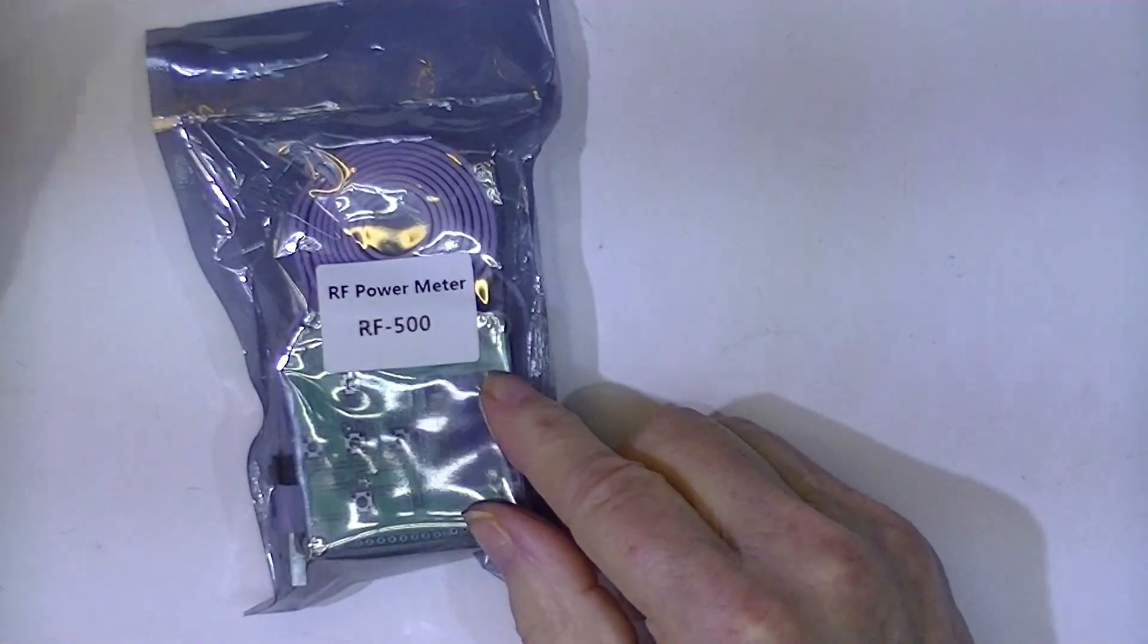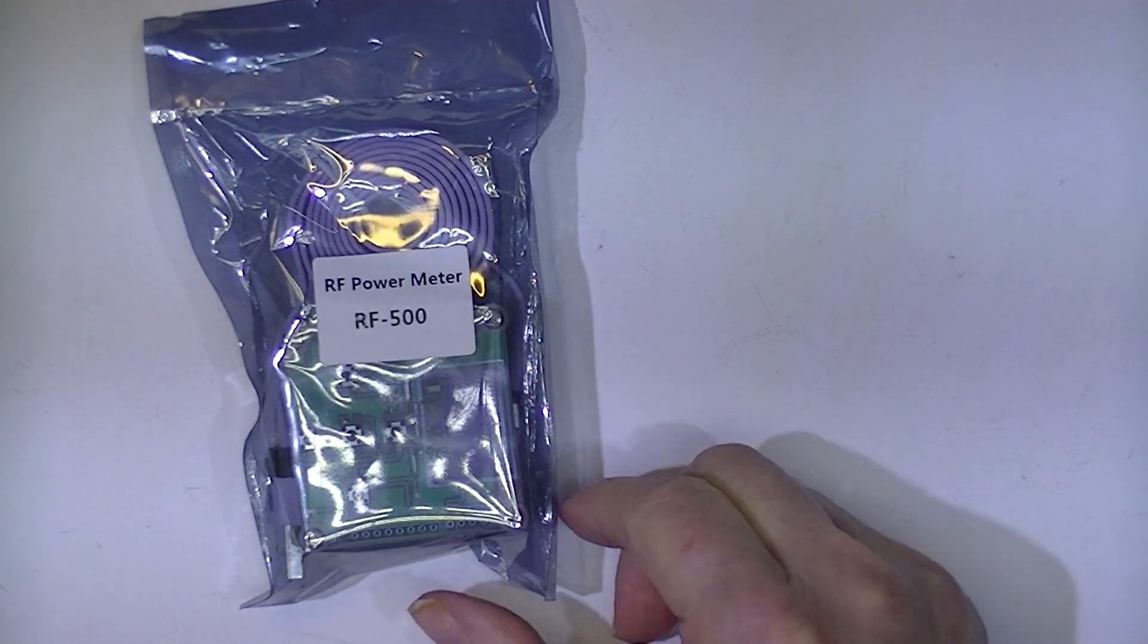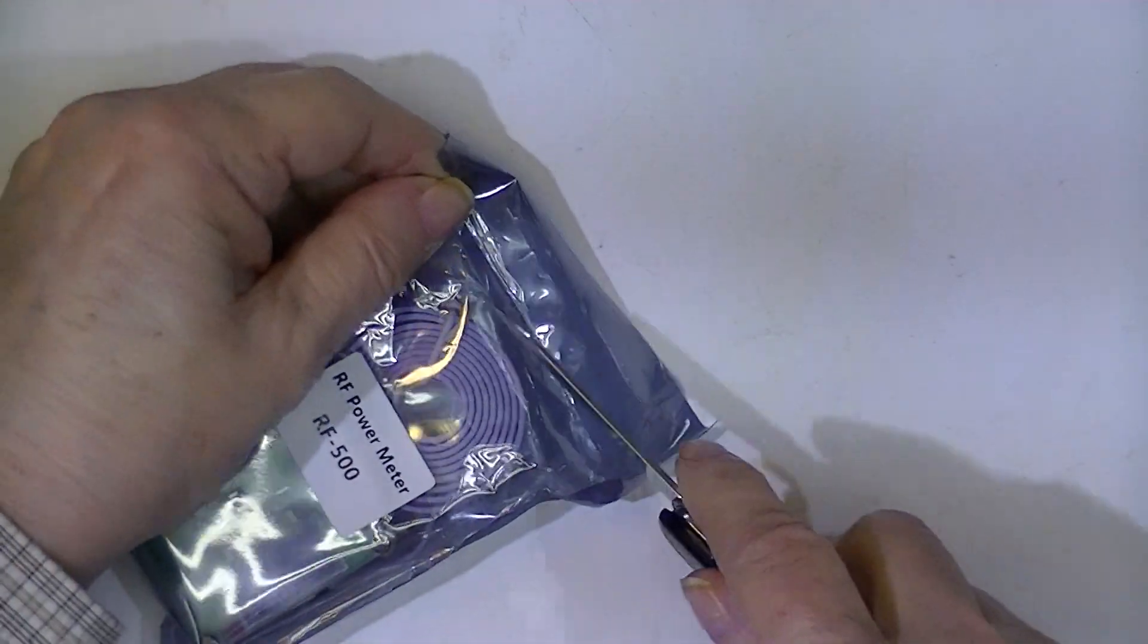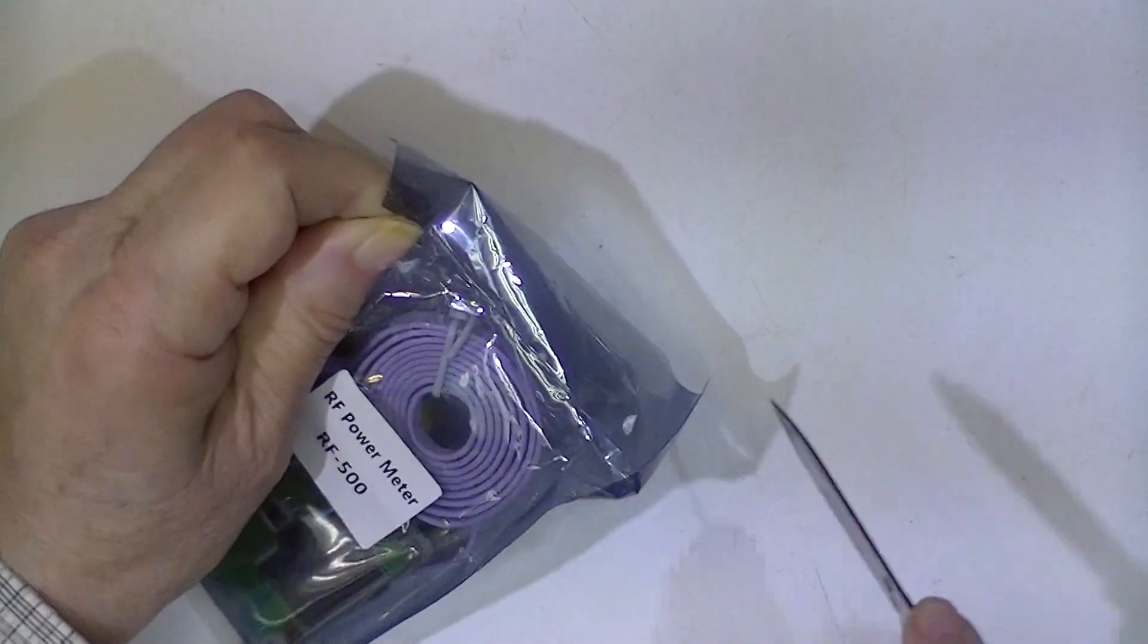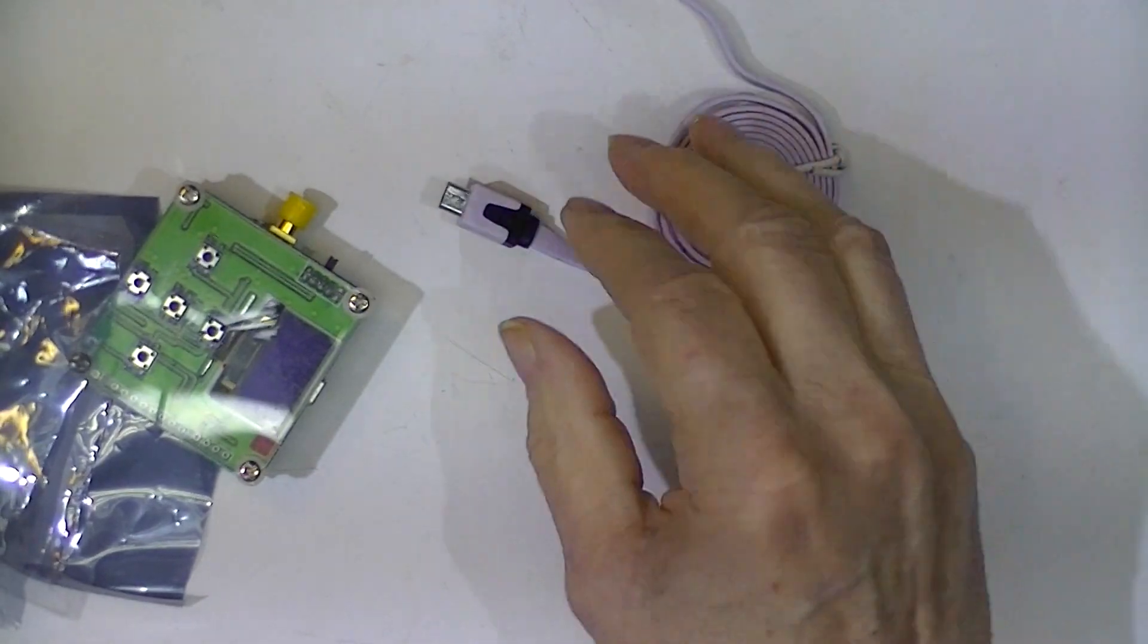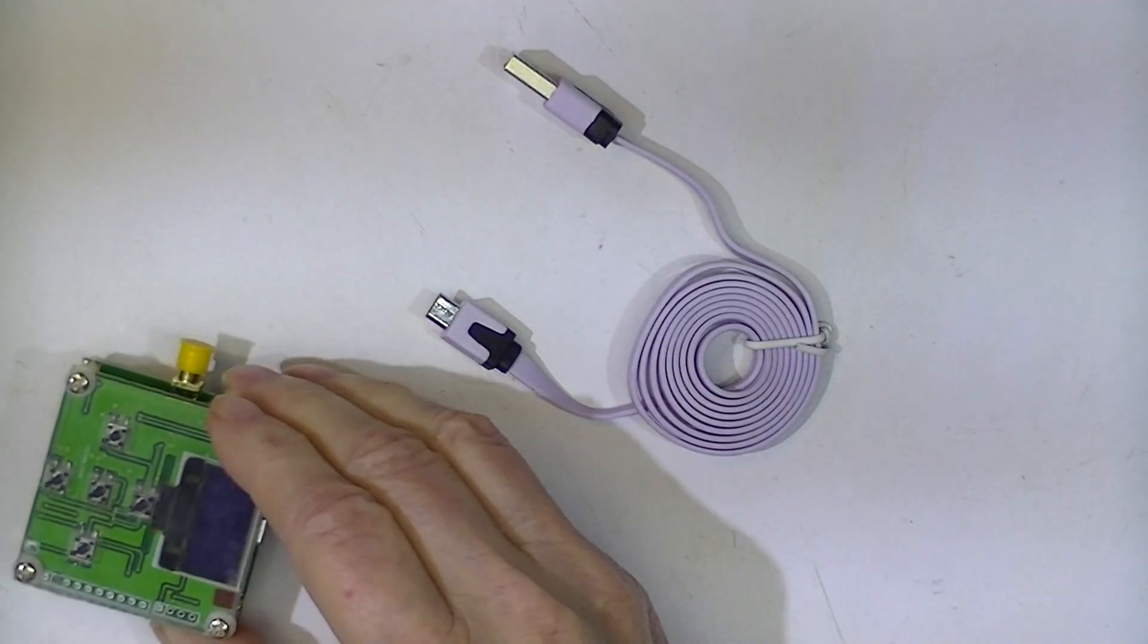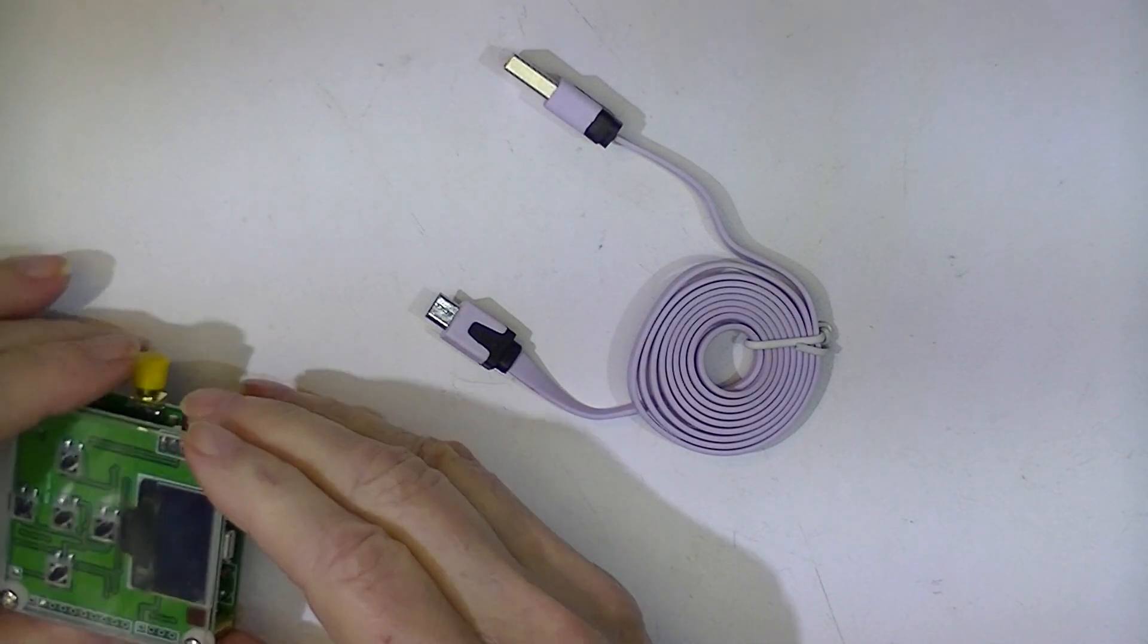So the first thing out of the bag is an RF power meter. I've done a lot of looking on the web. This thing apparently can be driven with software. It comes with a USB cable and can also be powered by the USB port.